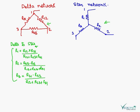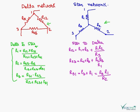Now, we will see how a star network is converted into delta network. The resistances in star connection can be converted into the resistances in delta connection using these three formulas.